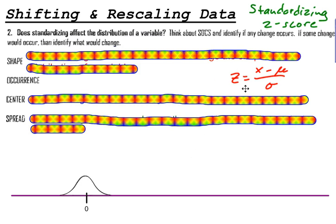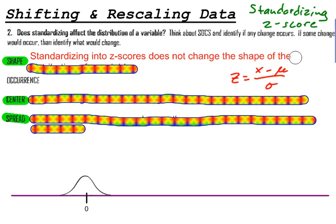So when I find z-scores or standardize my data, what is happening? If you think about GoSocs again, the three most important parts of GoSocs, even though we have gaps and occurrence and outliers, the three most important parts of GoSocs are the shape, the center, and the spread. So let's take a look. When I standardize the data, or standardize into z-scores, what happens to the center, the shape, and the spread? Well, let's start with the shape.